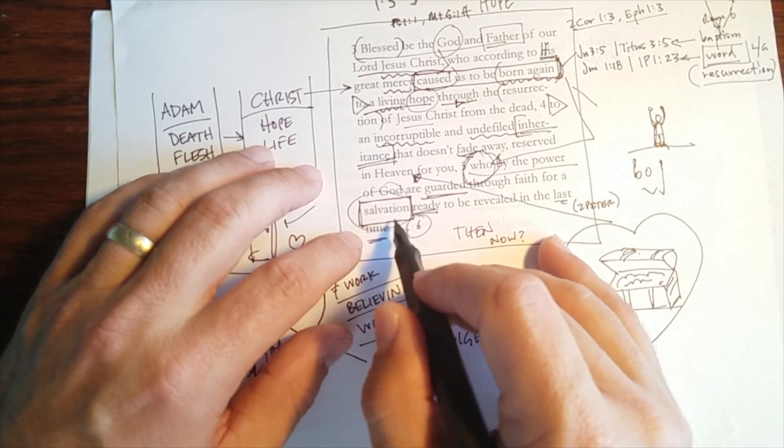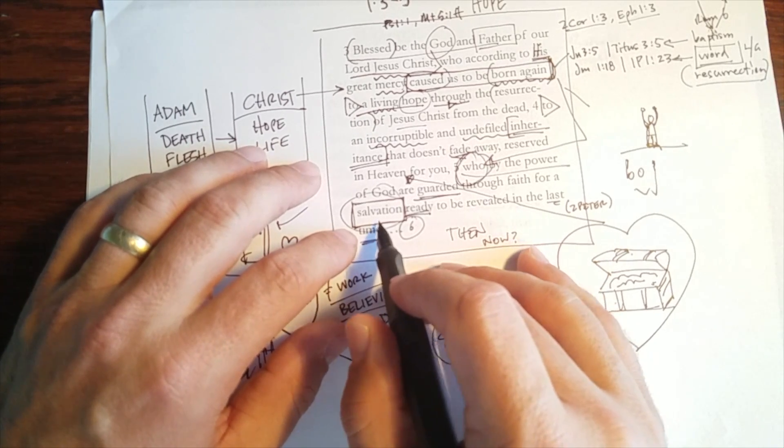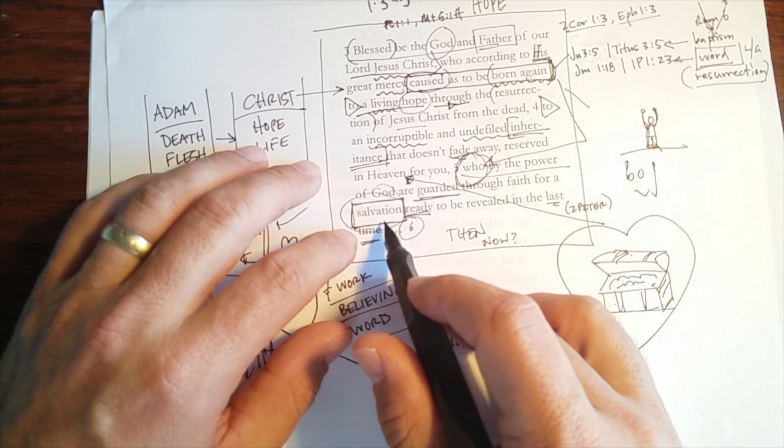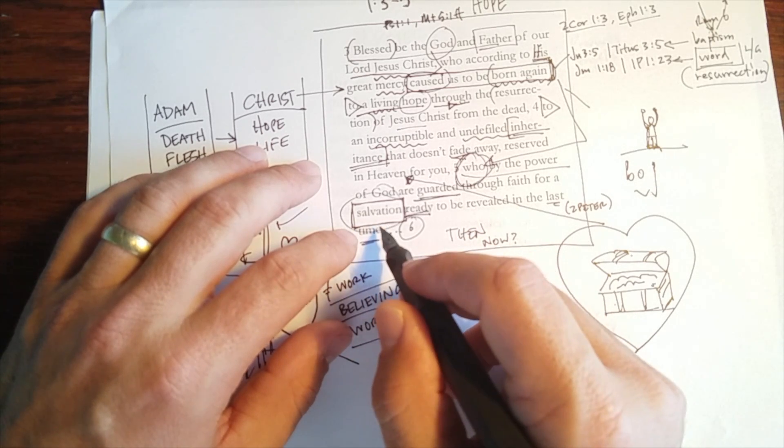So the salvation that it's talking about here is the complete redemption of our body and of creation, which was won for us through the death of Jesus on the cross. So it's the victory of the cross brought to its fullness in the resurrection. That's the salvation.